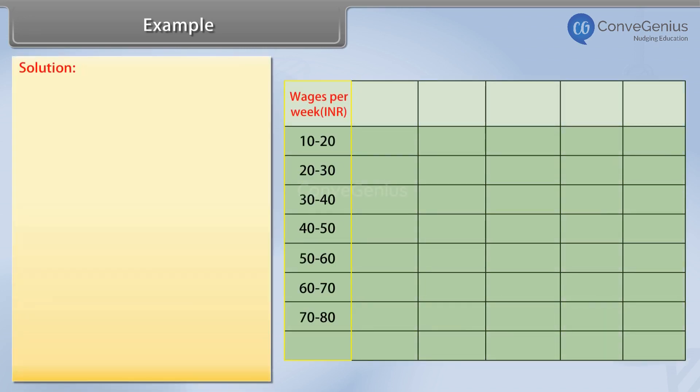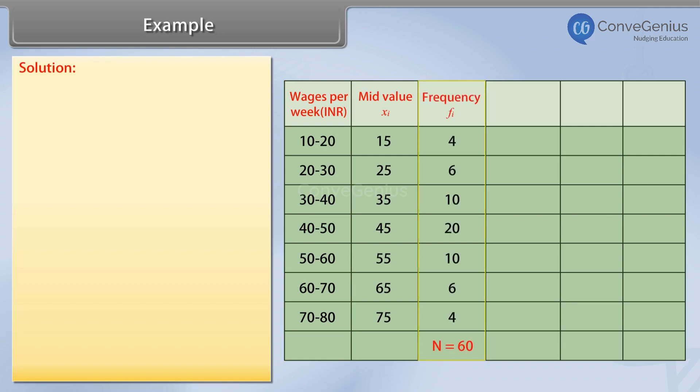Solution: In the first column, we have written the wages per week as given. In the second column, the mid-values of each class are written as xi. In the third column, we have written the frequency fi as given.